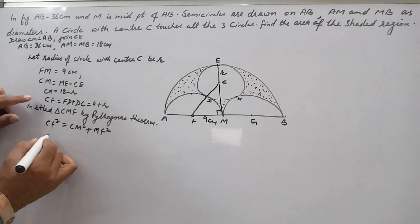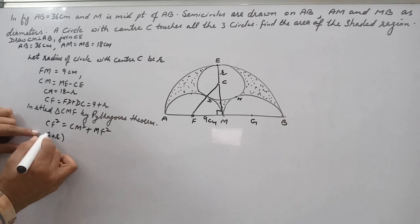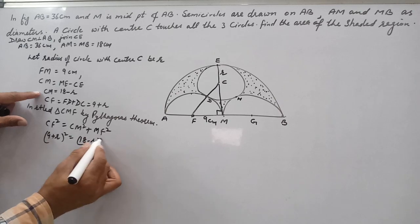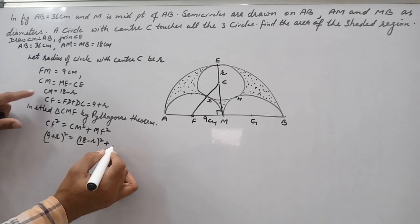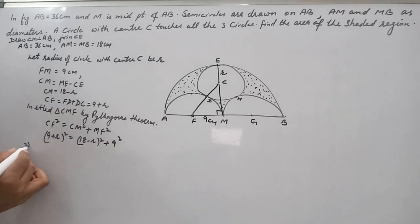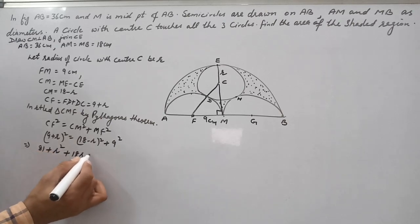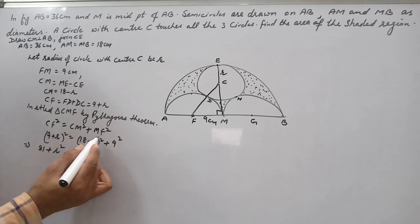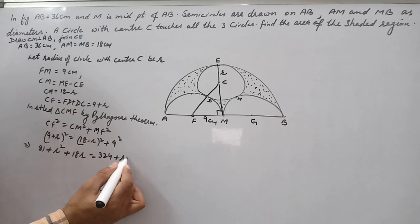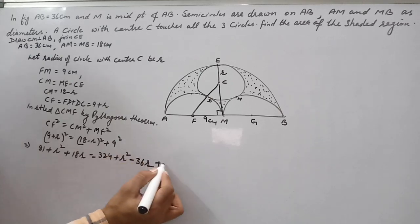So CF² is (9 + R)² equals (18 - R)² plus 9². Here we apply (A + B)² formula. So A² plus B² plus 2AB equals 18² is 324 plus B² minus 2AB plus 9² is 81.